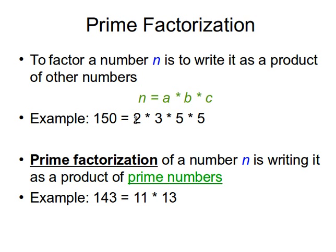For example, the number 150: 150 divided by 2 is 75. 75 divided by 2 doesn't work — here we mean integer division without a remainder. 75 divided by 3 is 25. 25 divided by 2, 3, or 4 doesn't work. By 5, we get 5, and 5 divided by 5 is 1. So the factors of 150 are 2 times 3 times 5 times 5.